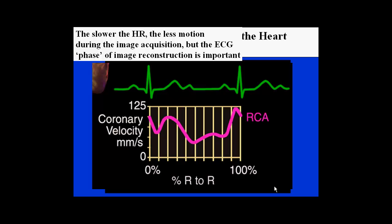The slower the heart rate, the less motion during image acquisition. The ECG phase of ultimate image reconstruction is incredibly important. For fast heart rates — for 64-slice, single-source imaging, fast could be anywhere between 65 to 70 beats per minute — systolic imaging tends to be the best situation with respect to motion and acceleration. However, if we can get the heart rate down to 55 or 60 beats per minute for a traditional 64-slice CT, then end-diastole, or more properly called diastasis, is a better choice for reconstruction.